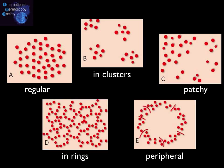Five are the basic distributions that can be seen in inflammatory lesions: regular, meaning homogenous and symmetrically distributed all over the surface of the lesion; in clusters, similar to what we see in Bowen's disease; patchy, meaning asymmetrical but without following any specific pattern; in rings, which is a typical distribution for psoriasis; and peripheral.